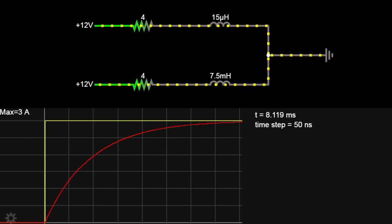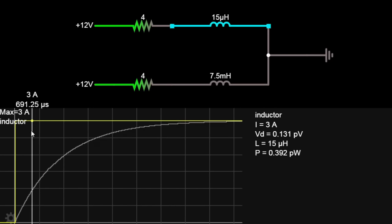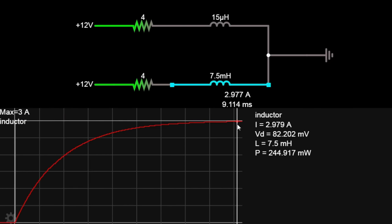The yellow line represents current through the 15 microhenry inductor, and the red line is current through the 7.5 millihenry inductor. The smaller inductor reaches peak current in a matter of microseconds, whereas the larger inductor takes almost 10 milliseconds to peak.